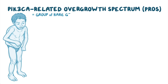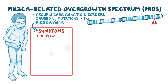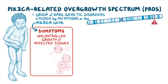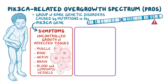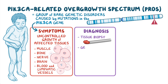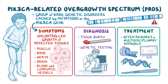As a quick recap: PROS is a group of rare genetic disorders caused by mutations in the PIK3CA gene, which causes uncontrolled growth of affected tissues such as muscle, bone, nerve, brain, and blood and lymphatic vessels. PROS is diagnosed through tissue biopsy and genetic testing, and treatment often requires a multidisciplinary approach.